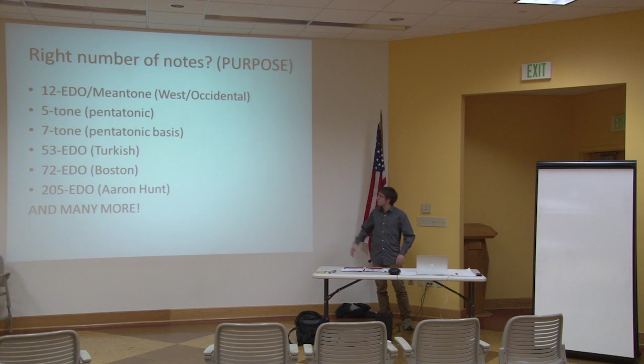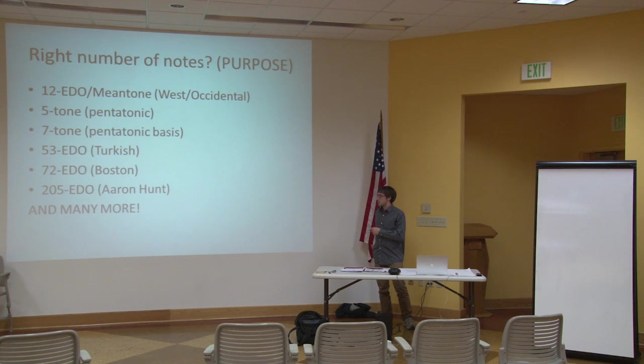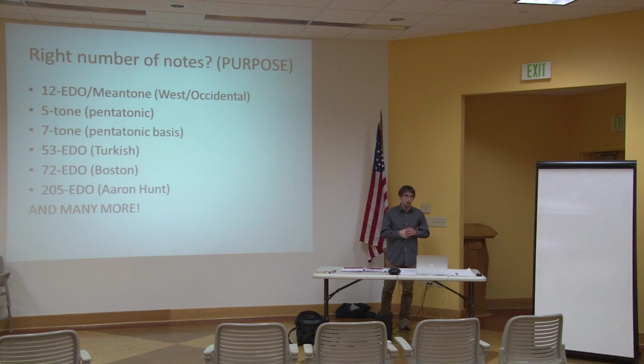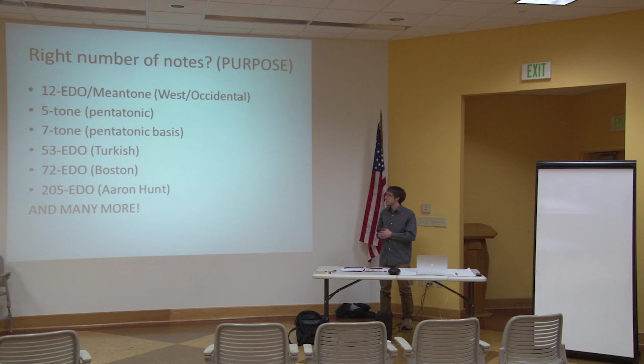Moving on to 53-tone — 53 is very good at approximating diatonic harmony. The Turkish tradition uses it because they play maqam music, which has an oral tradition. When the West came over and started influencing them, they had to quantify it, and they decided their music functioned as a subset of 53 EDO. Their music isn't going to be wild and exploratory with serialism; they simply use it to classify what they've been doing all this time.